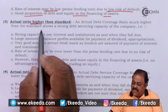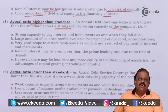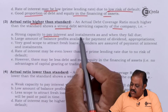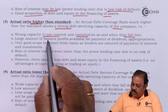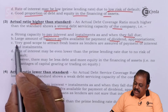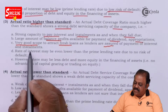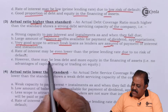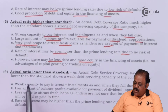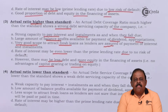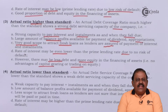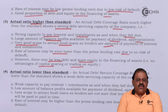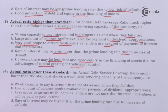An actual debt service coverage ratio much higher than the standard shows strong debt servicing capacity, strong capacity to pay interest and installment as due, a large balance profit for dividends and appropriation, and very good scope to attract fresh loans. The rate of interest may be even lower than the prime lending rate due to no risk of default. However, there may be less debt and more equity in financing assets — meaning no advantage of capital gearing or trading on equity.